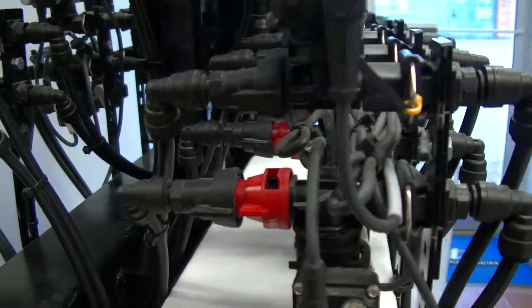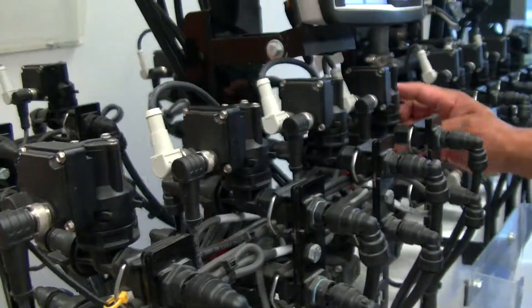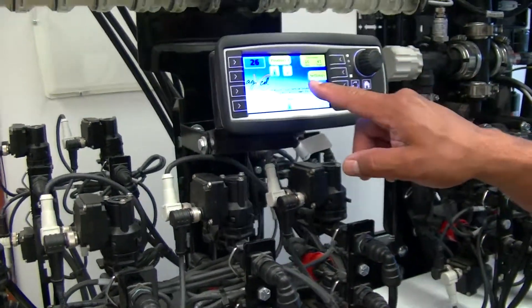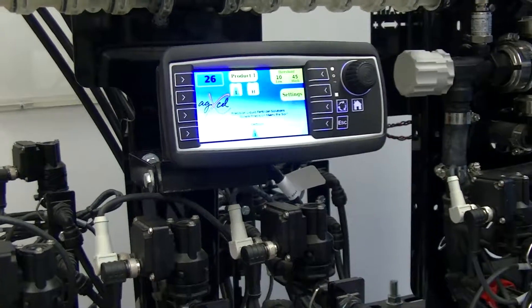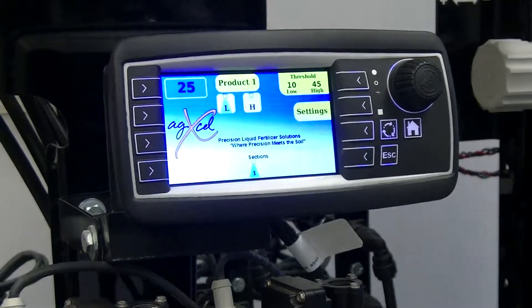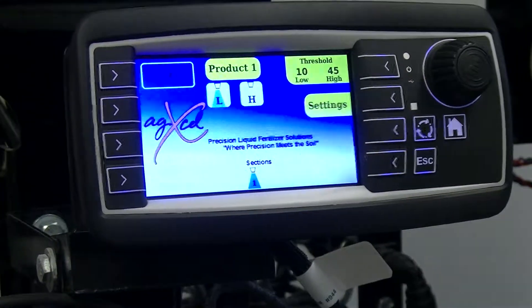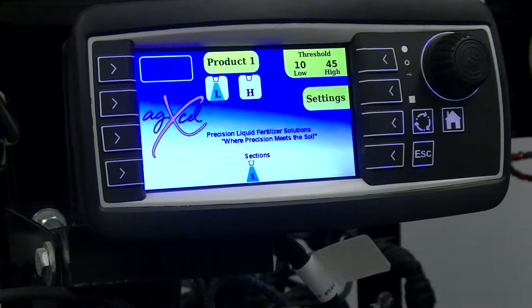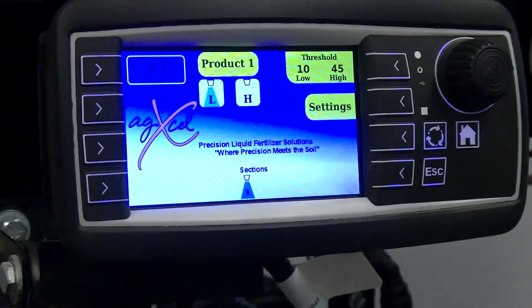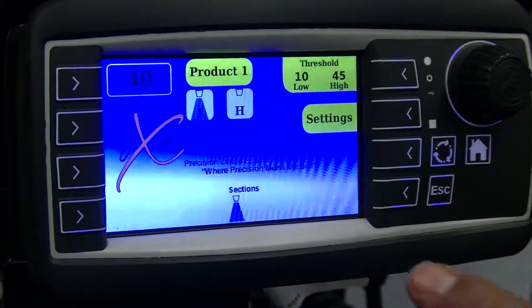When we simulate that on our controller, we have those on the bottom. If I raise my rate, right now I'm doing five miles an hour at five gallons per acre. If I raise that up, you'll see my pressure go up and it'll shift to my high side.